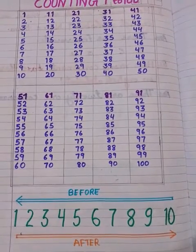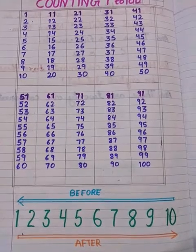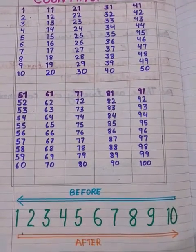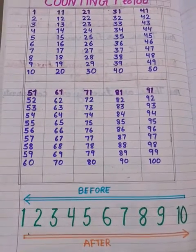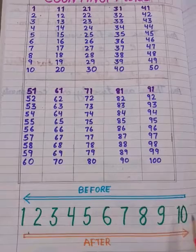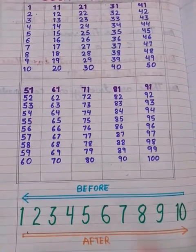Students, I know sometimes you feel difficulty in doing before and after. So, I found a very easy way to do this. Look at here, you can make a number line from 1 to 10 and make two arrows from right to left and left to right.